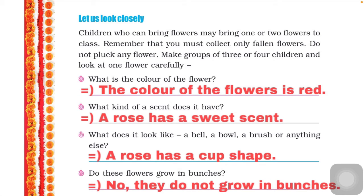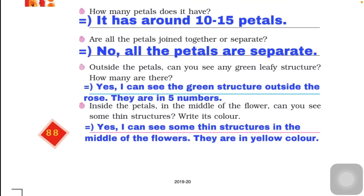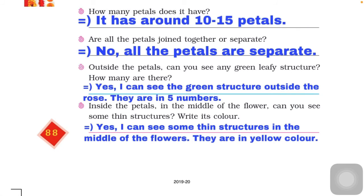The next question is: how many petals does it have? In a rose flower there are around 10 to 15 petals, and in a hibiscus flower there are 5 petals.